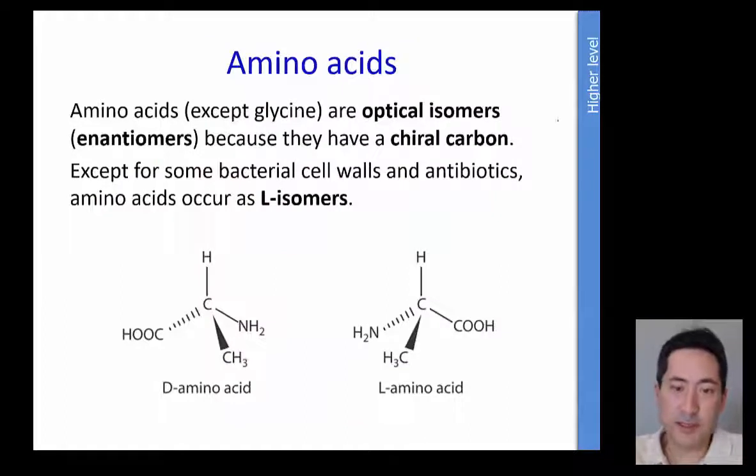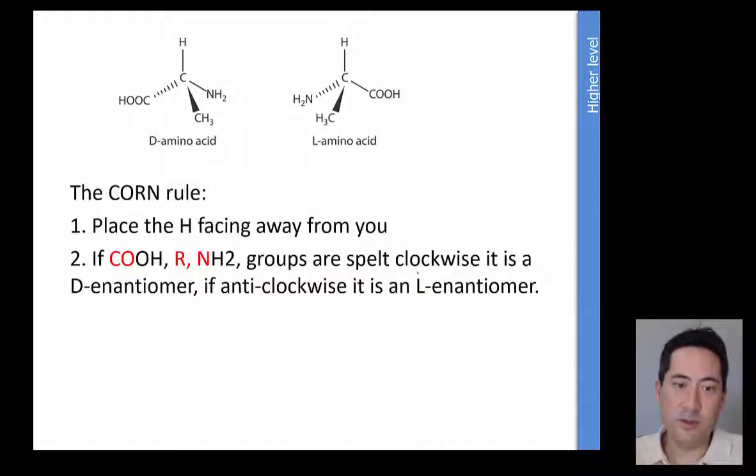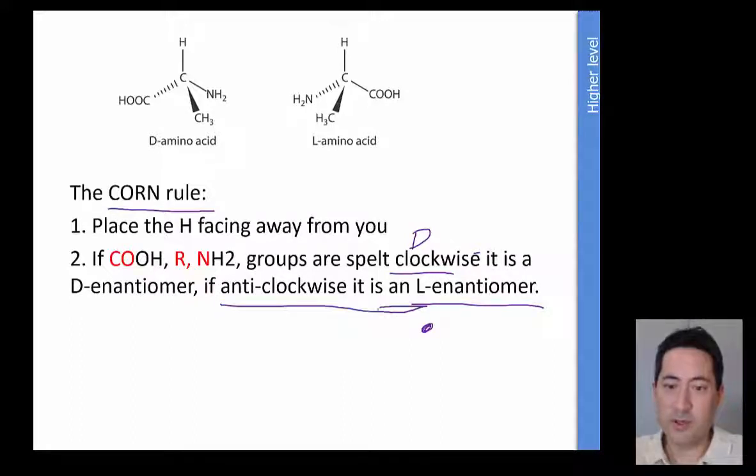So moving past that, now the new thing for this one is you have to be able to tell the difference between a D and an L. And so you have to point the hydrogen away from you and then you have to tell whether using this corn rule. And even that, even though you know corn rule, you've still got to remember that clockwise is a D and anti-clockwise is an L. So it's a lot to sort of try and work out how to remember that one. And I don't have one for you at the moment. So you can leave a comment somewhere about how to do that. So I'm just going to swap to just another presentation to show how I do it.